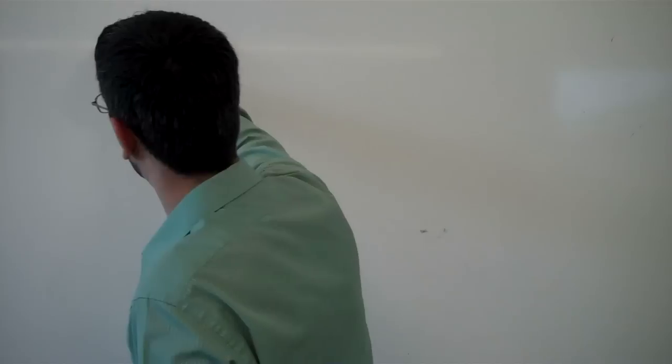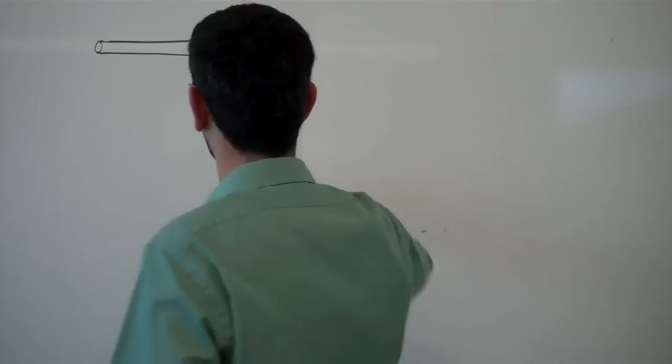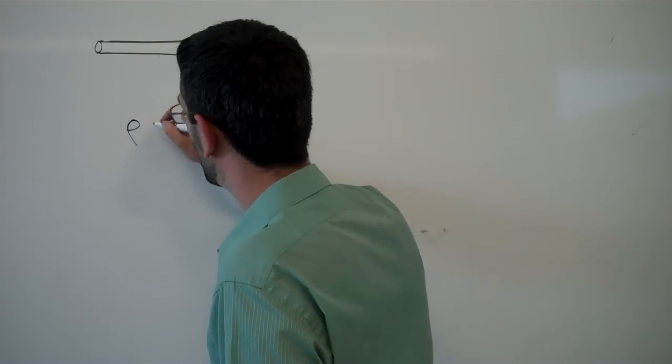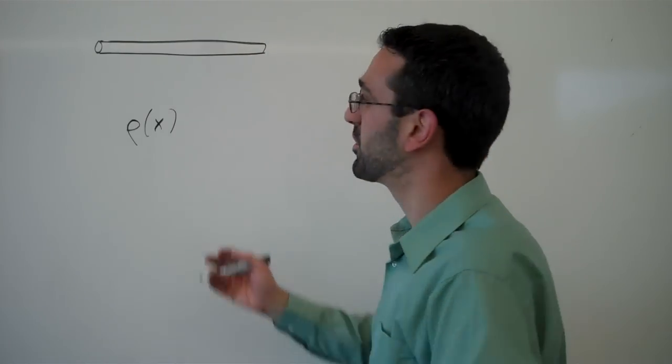Now we want to find the mass of a rod where we know the linear density. We're imagining we have some sort of metal rod where, because of the way it was constructed, the density of the material depends upon the location on the rod.